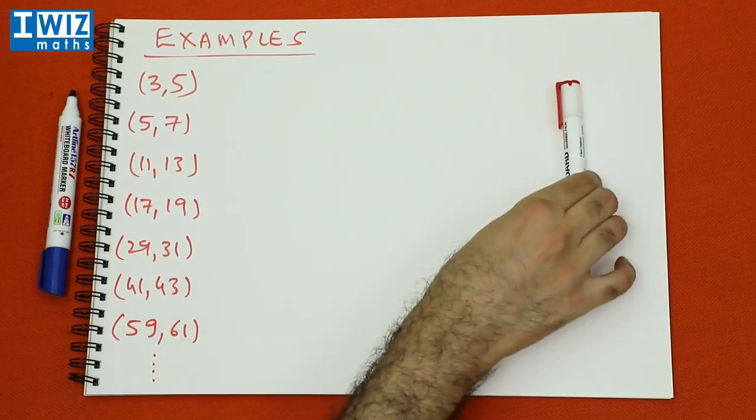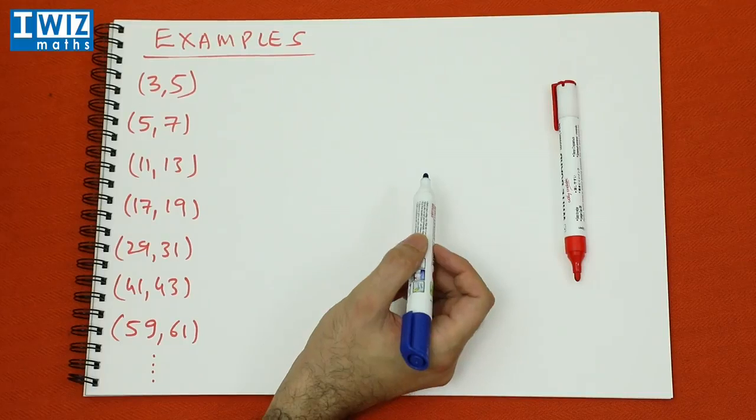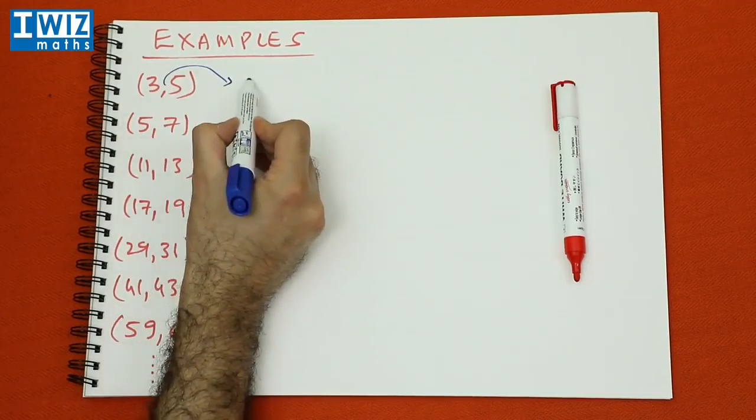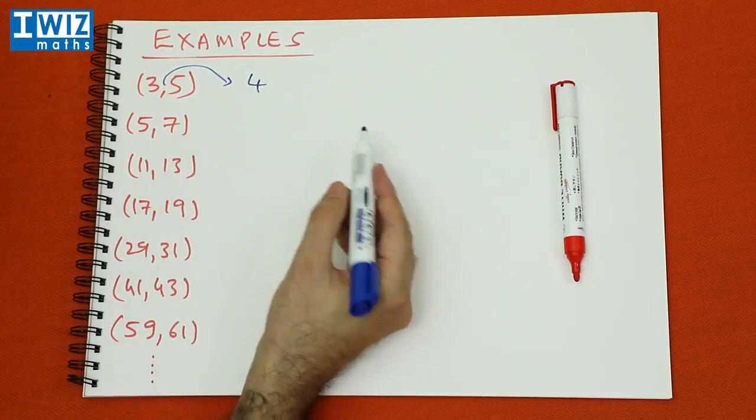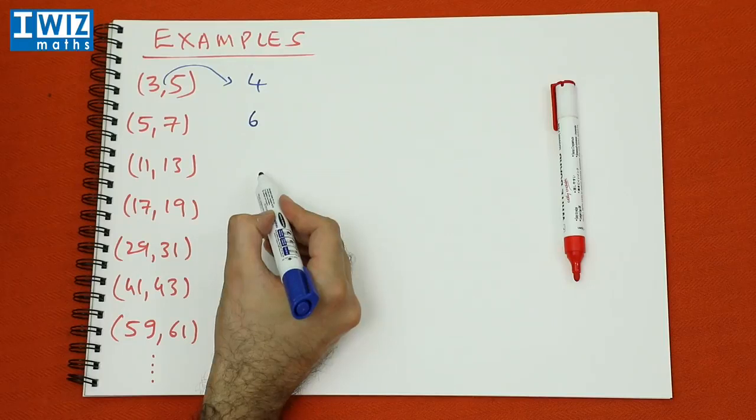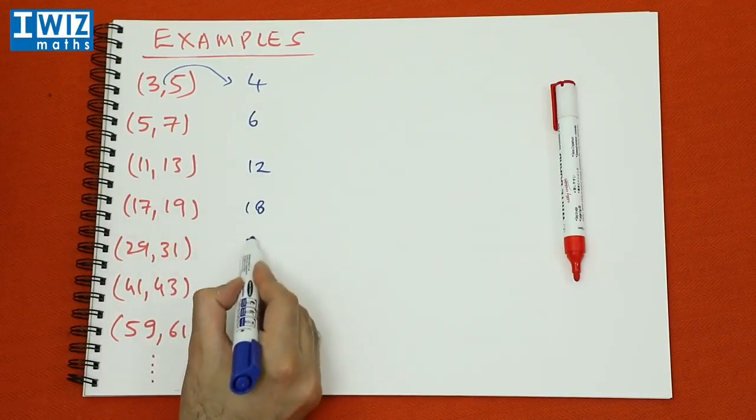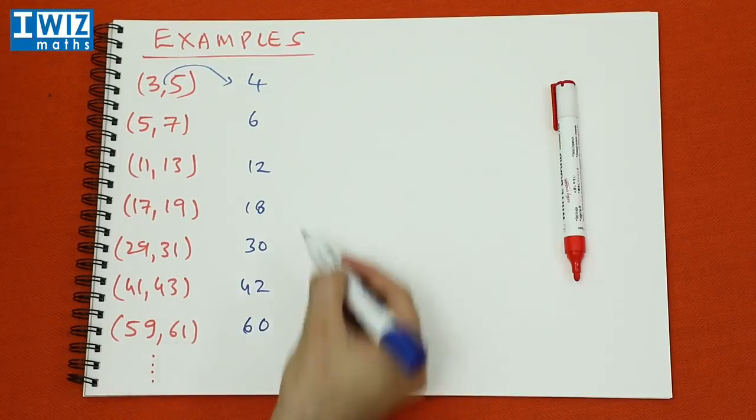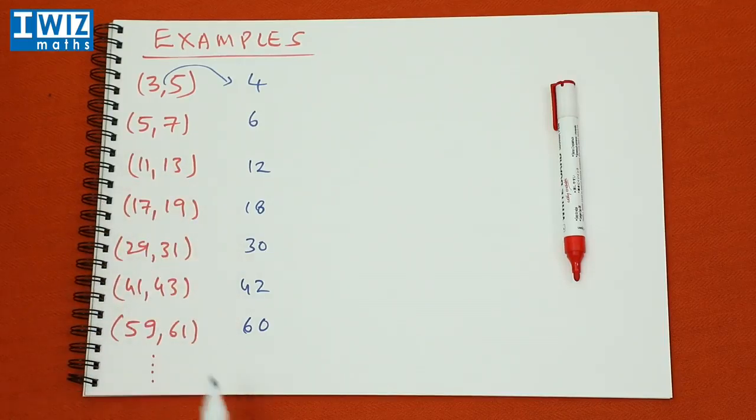So let's look at some properties of these twin primes. Let's look at the number that falls in the middle. So the number that falls in the middle is 4. The number in the middle of these two twin primes is 6, the number in the middle of these two is 12, 18, 30, 42, 60. So these are the numbers that are in the middle of the twin primes.